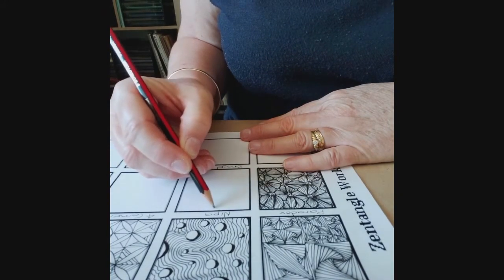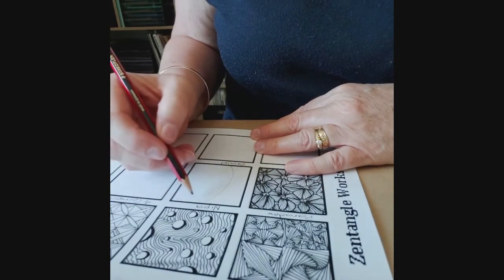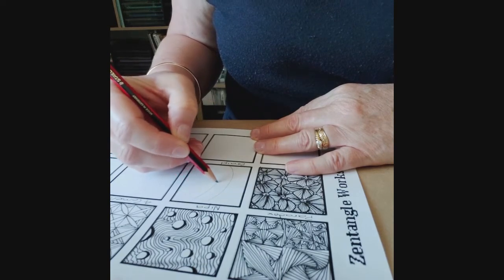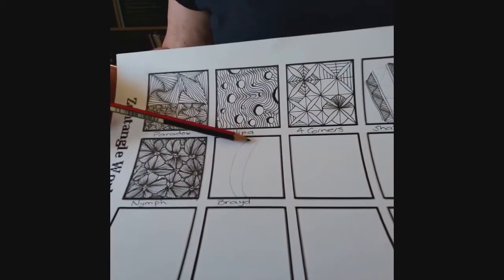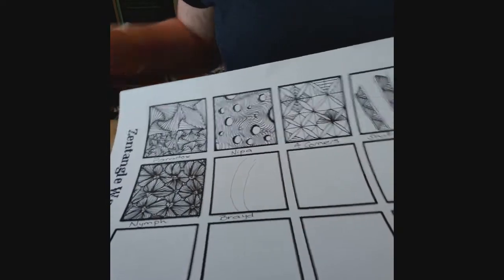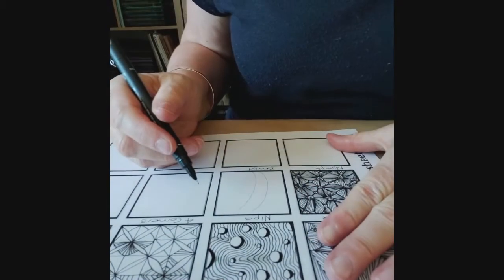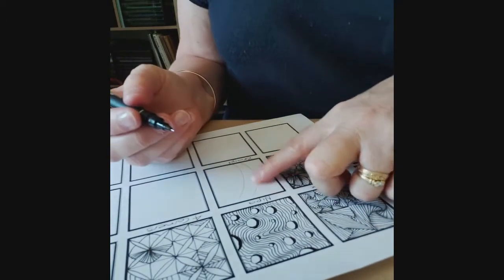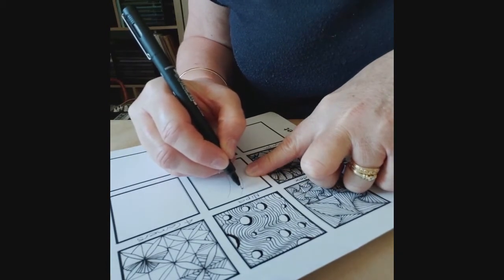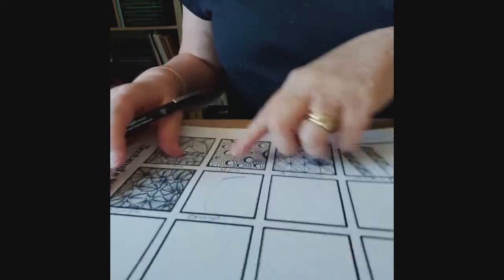The second tangle I'm showing you today is called Braid. And using my pencil, I'm just going to draw in, think of it as a string. I'm just going to draw in the area within which we'll be working this particular tangle in. So I like to think of this one as the word suggests, a braid, a hair braid. And what we're going to do is with our string as our guide, going to draw two lines gently curving up as I have here.